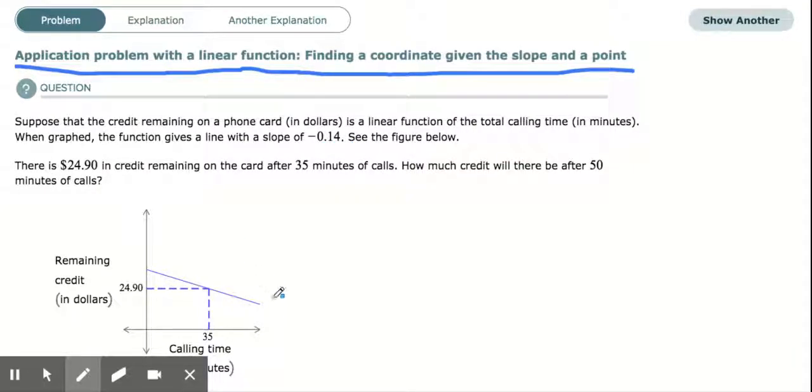So let's go ahead and label what we know. We see this line here that represents the function and we're given that the slope is 0.14,